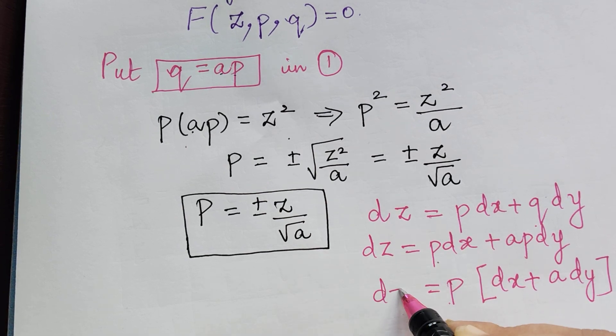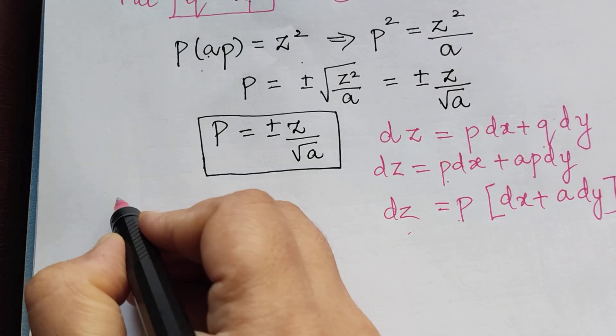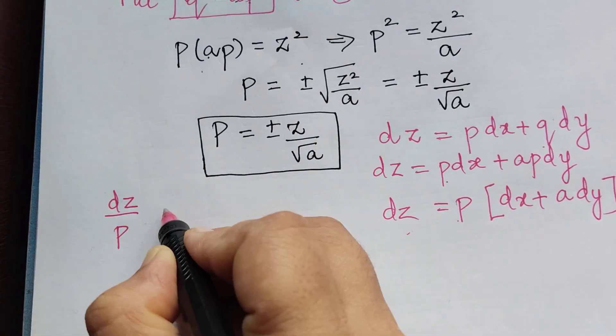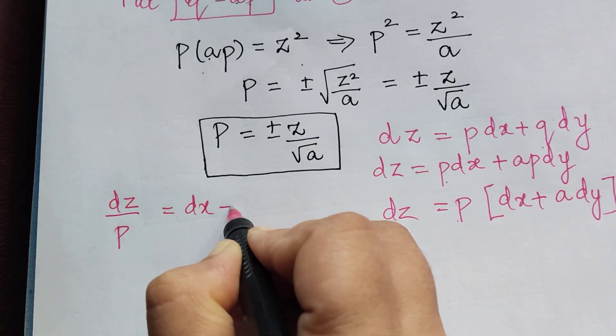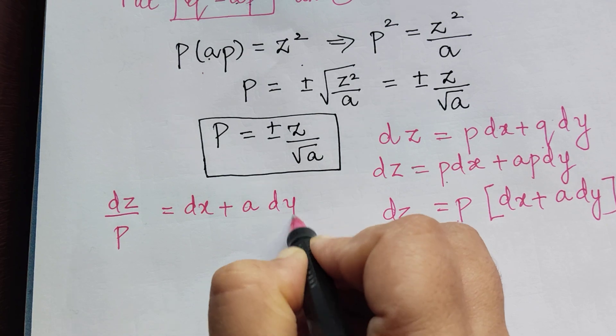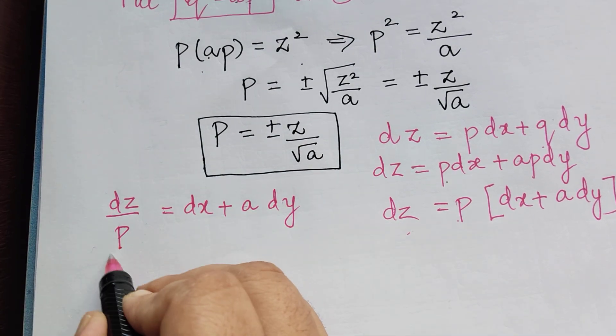Taking P to the left, it becomes dZ/P = dx + A dy. Now we shall substitute the value of P here.